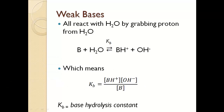Weak bases follow the same concept, except the weak base grabs a proton from water. So you have B plus water, which grabs a proton to become the weak conjugate acid BH+, leaving behind a hydroxide ion. The equilibrium constant in this case is called the base hydrolysis constant, Kb. Remember that water is not included because it's a pure liquid.